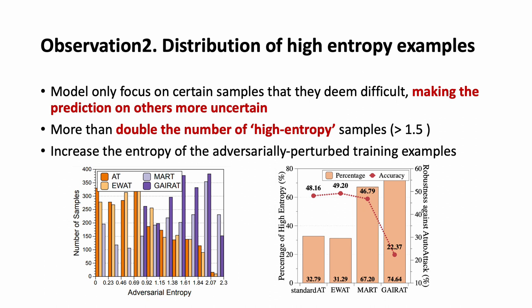Moreover, there are 74.64% of examples that have higher entropy over 1.5 in reweighting approaches. This leads us to believe that previous reweighting methods make the model more uncertain in its predictions, which can result in vulnerability to logic attacks and also to auto attacks.